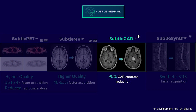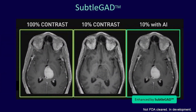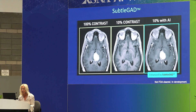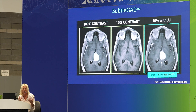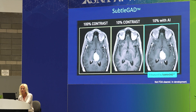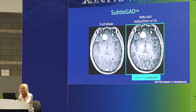Let's take a look now at Subtle GAD. Subtle GAD allows us to have a 90% gadolinium dose reduction — this is a product in development. Here's a patient with a tumor at 100% contrast showing homogeneous enhancement. If you drop the GAD dose down to only 10%, you really don't see any enhancement whatsoever in the tumor. But then if you take this image and apply deep learning, it looks just exactly like the standard of care. Here's full dose with this meningioma, and this is 90% reduction in dose — it looks just like the original.